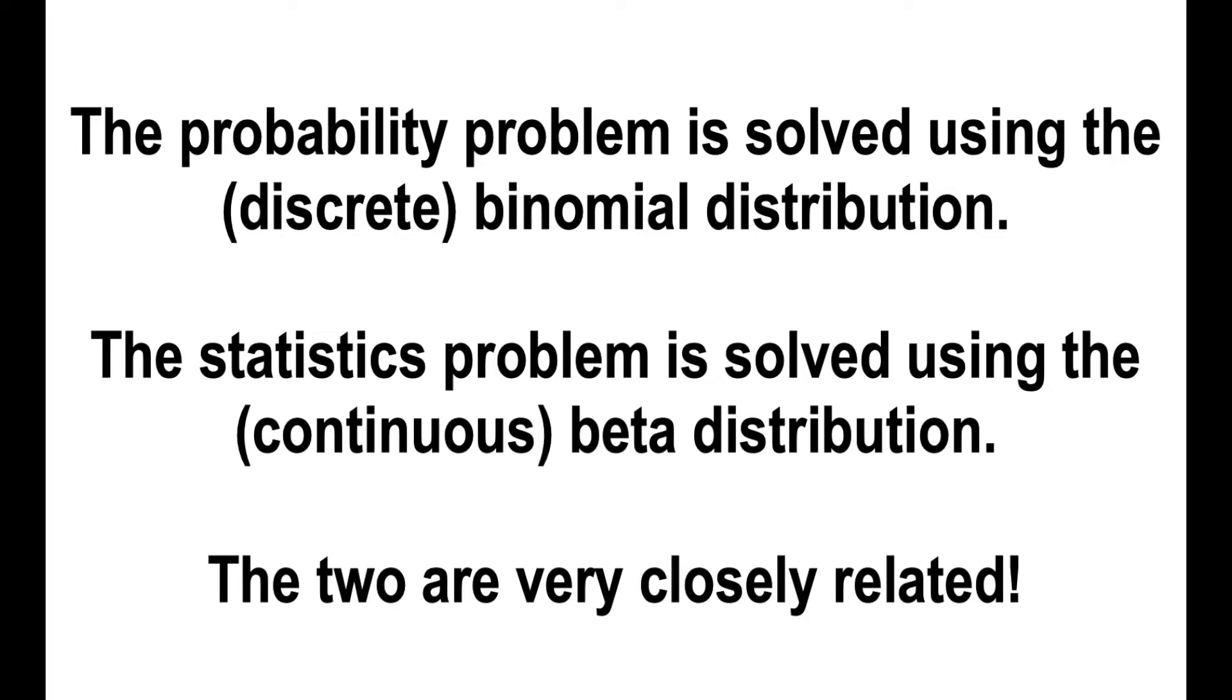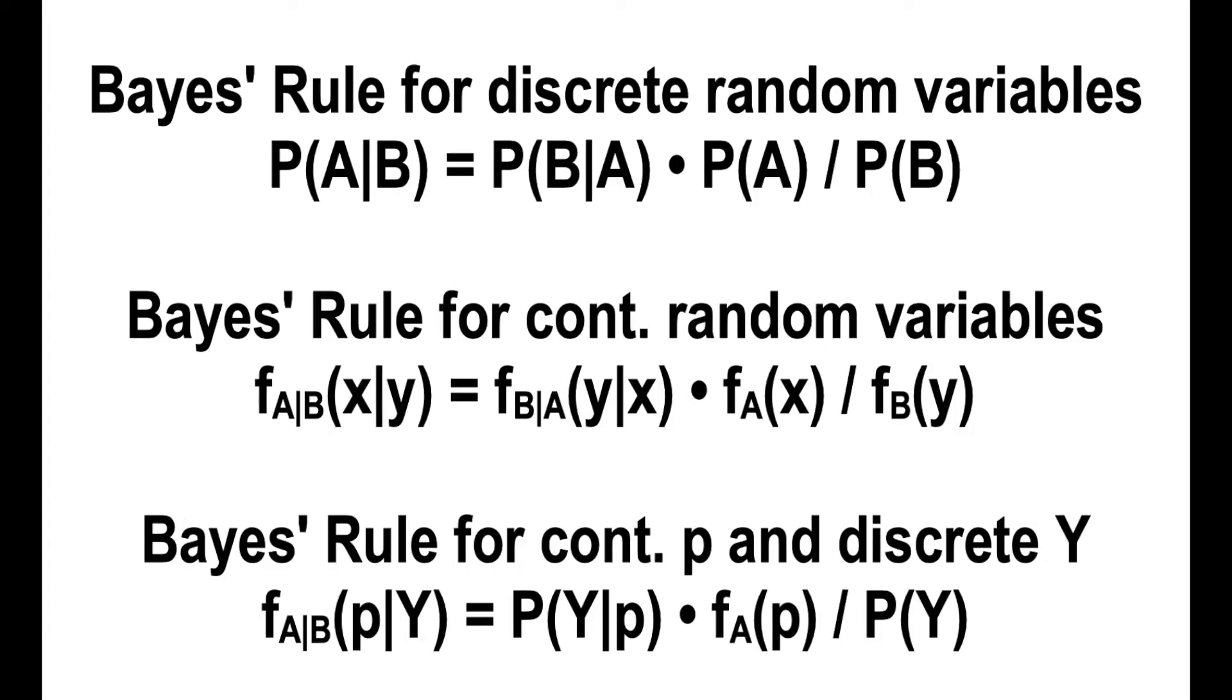The probability problem uses the binomial distribution. The statistics problem uses the beta distribution. The two situations are combined using Bayes' rule.